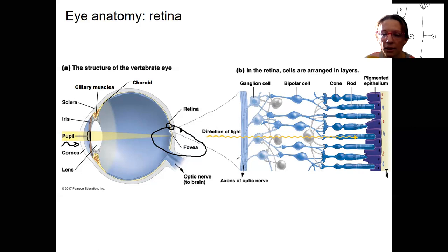And then the vitreous humor would be over here. And the light is going to actually pass through multiple layers of cells. They're primarily transparent, so light can pass through them, and it's going to hit the cells in the back.